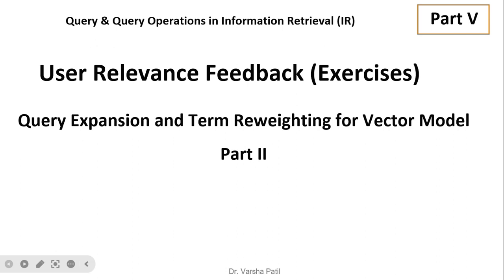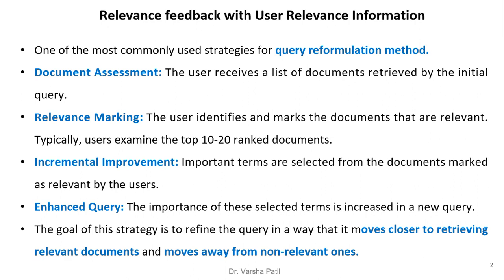One of the most commonly used strategies for query reformulation is document assessment. The user receives a list of documents retrieved for the initial query, then identifies and marks relevant documents — typically examining the top 10 to 20 ranked results. Important terms are selected from relevant documents, their importance is increased in the new query, moving it closer to relevant documents and away from non-relevant ones.